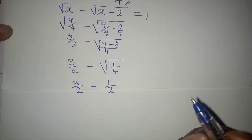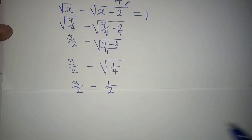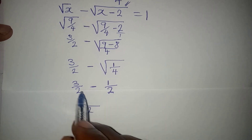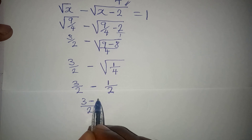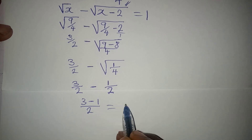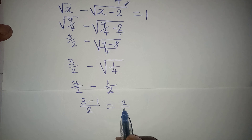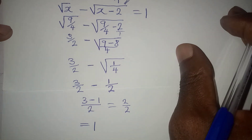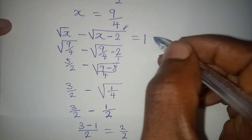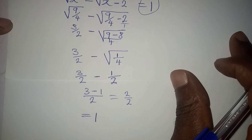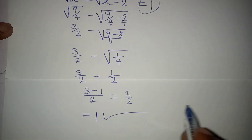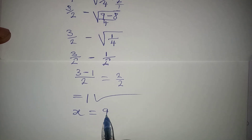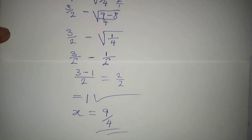Finding the LCM of both fractions with denominator 2, we get 3 minus 1 over 2, which equals 2 over 2, and that equals 1. This is exactly the answer we were looking for, so we are correct to say that x equals 9 over 4. Thank you for watching.